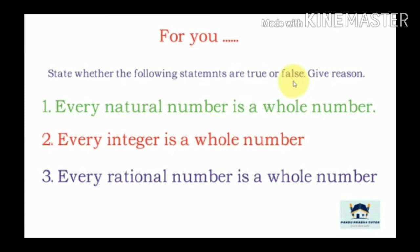Now some more statements for you to try at home. First: Every natural number is a whole number. Second: Every integer is a whole number. Third: Every rational number is a whole number. State whether these statements are true or false and give the reason.